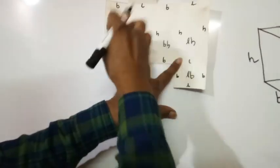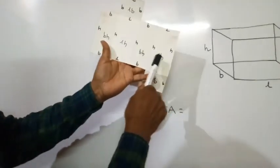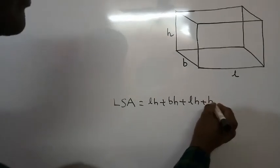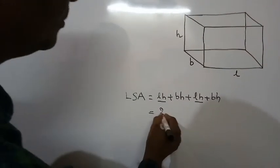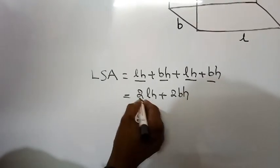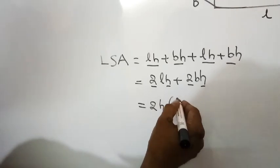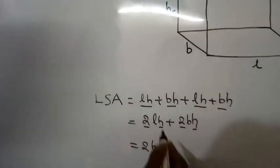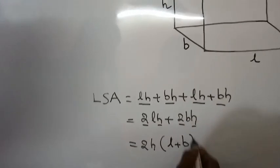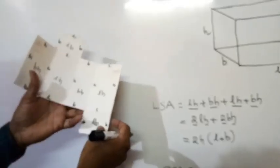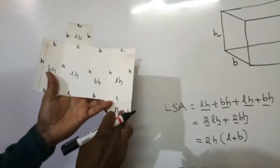To find the lateral surface area, we add: LH + BH + LH + BH. We have two LH and two BH. Taking 2H common, we get 2H(L + B). Therefore the lateral surface area of a cuboid is 2H(L + B). Now to find total surface area, we add the top and bottom faces to the lateral surface area: lateral surface area plus LB plus LB.